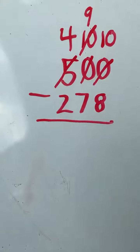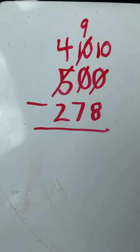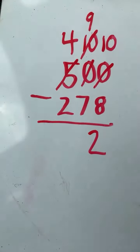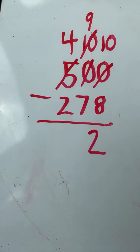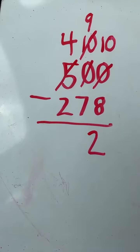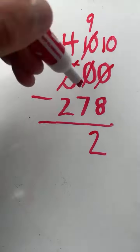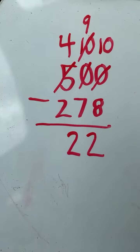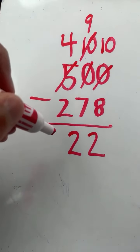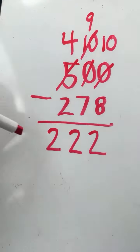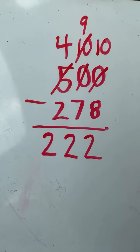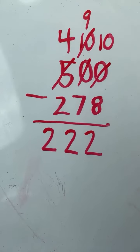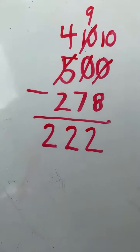So that ten is going to become a nine, and now we are ready to subtract. Ten minus eight equals two, nine minus seven equals two, four minus two also equals two. And we have our final answer: 500 minus 278 equals 222.